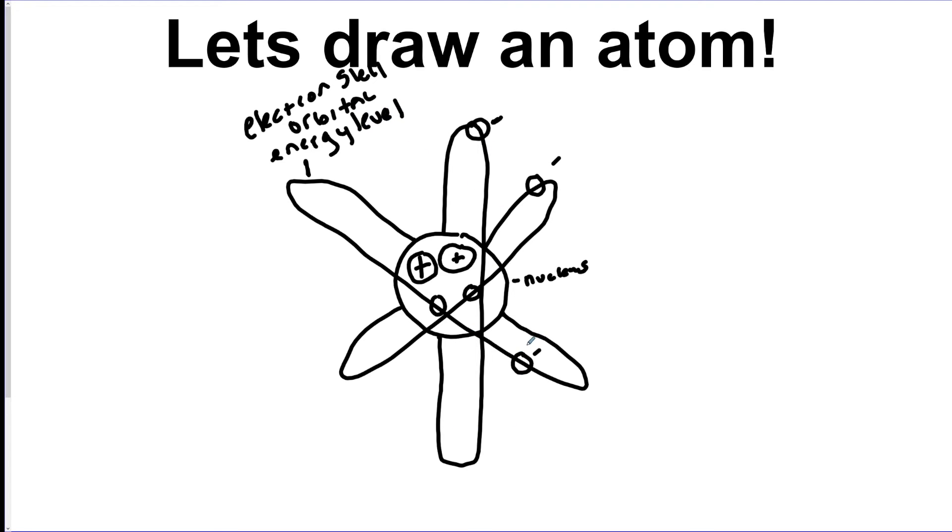So this is our electron, and we've got our proton right here and our neutron over there. That's the basics: the three particles in an atom and what matter is. I'll see you on the next chemistry video. Thanks, bye!